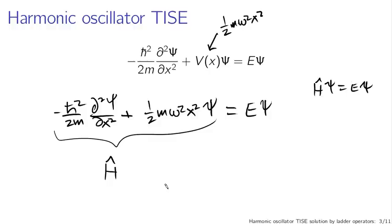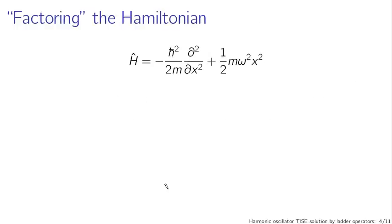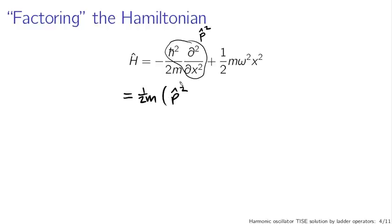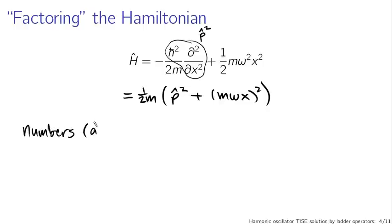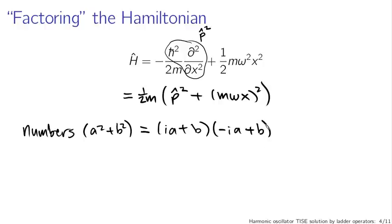The cleverness comes in here. Consider factoring the Hamiltonian. I can pull out 1/2m and write the kinetic energy part as p̂², so the Hamiltonian becomes 1/2m times (p̂² + m²ω²x²). This is suggestive. If we had numbers and had something like a² + b², we could factor that over the complex numbers as (ia + b)(−ia + b). Expanding that out, the cross terms cancel out and we get back what we started with.